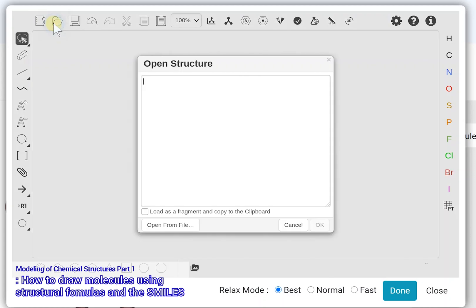Select Open icon on the top sidebar. Write CCOCCCO in the box where the cursor is blinking, and click the OK button.